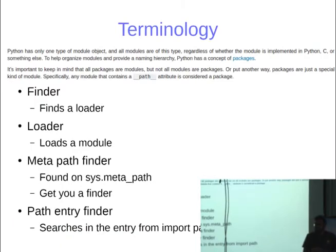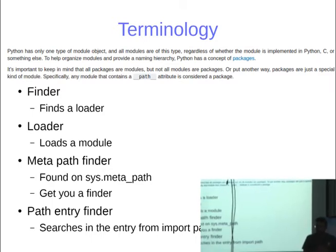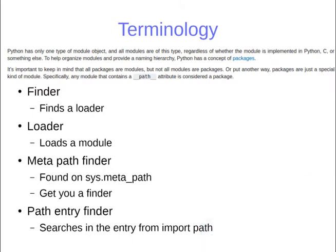A bit of terminology I'll use throughout the talk: a finder is the one which finds a loader, and a loader is the one which loads a module into your namespace. A meta path finder is found on sys.meta_path and contains finders. A path entry finder gets you a loader but searches in the sys.path import path.